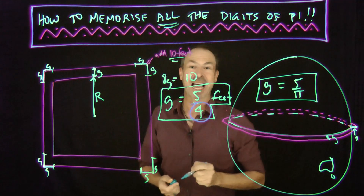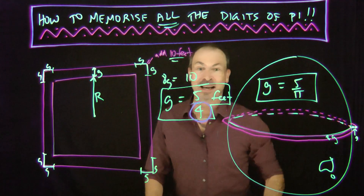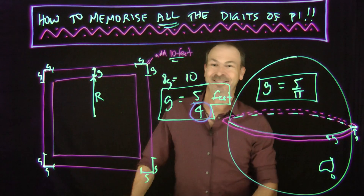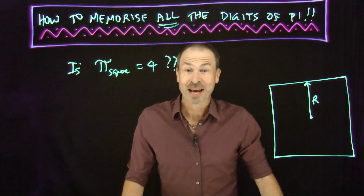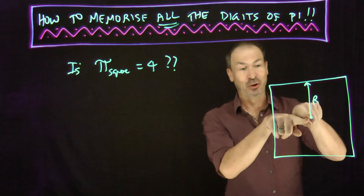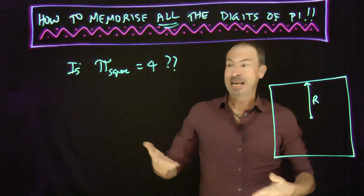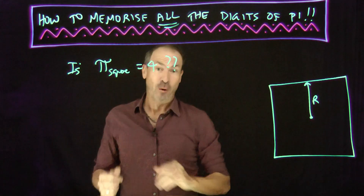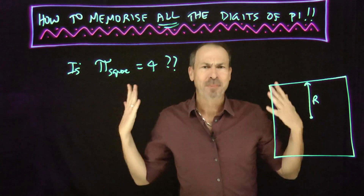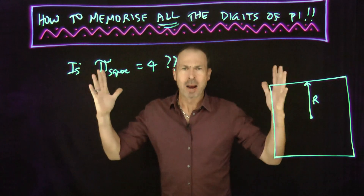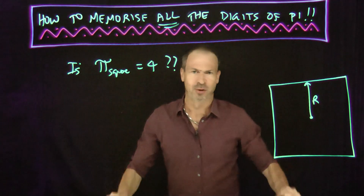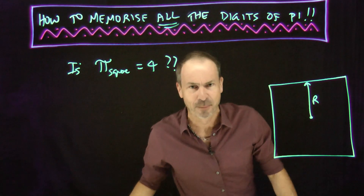So I have just concluded that the correct value of pi for a square is 4. Pi for a square is 4, and can you memorize the digits of 4? Yes, you can — you can memorize infinitely many digits of 4. It's 4.0000000000... as long as you like.